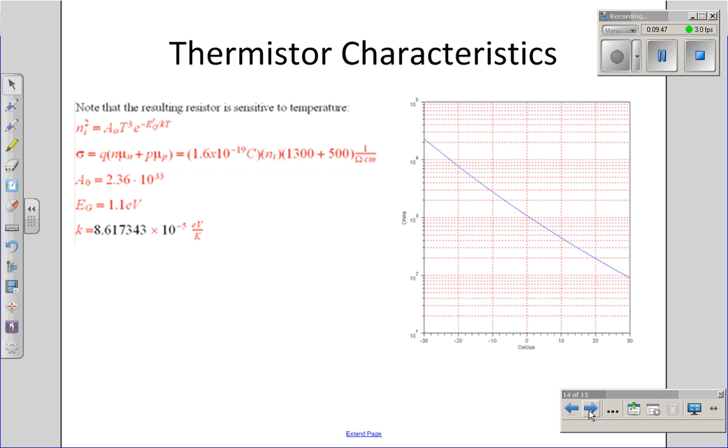Now, if I move away from room temperature, the resistance changes. As the temperature goes up, the number of thermal electrons increases from this equation, and I wind up with a lower resistance as temperature goes up. As temperature drops, the resistance goes up.